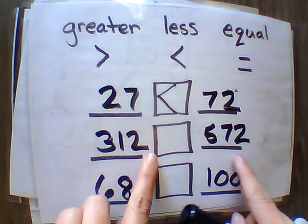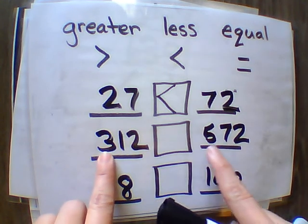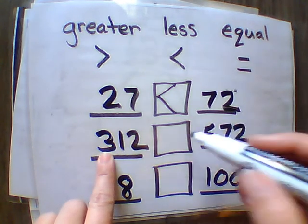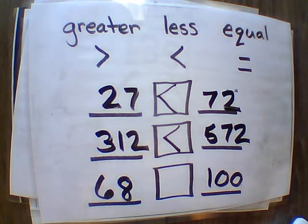Both of these have three digits. So I touch the hundred spot. Three hundreds and five hundreds. So five hundreds is more. So 312 is less than 572.